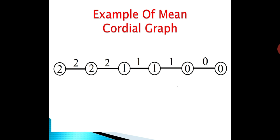Here is an example of a mean cordial graph. The vertex set is labeled with {0, 1, 2} and the edge set with {0, 1, 2}. For the first edge, the adjacent vertices are 2 and 2: (2+2)/2 = 2, so the first edge is labeled 2. For the second edge, (2+1)/2 = 1.5, and ⌈1.5⌉ = 2, so the second edge is labeled 2.